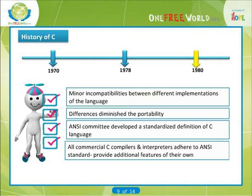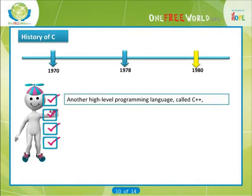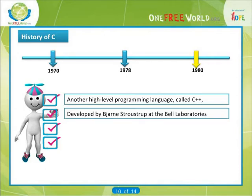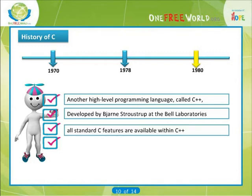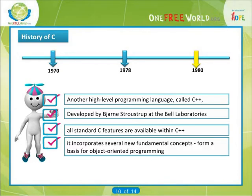Many also provide additional features of their own. In the early 1980s, another high-level programming language called C++ was developed by Bjarne Stroustrup at Bell Laboratories. C++ is built upon C and hence all standard C features are available within C++. However, C++ is not merely an extension of C; rather it incorporates several new fundamental concepts that form a basis for object-oriented programming, a new programming paradigm that is of interest to professional programmers.